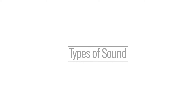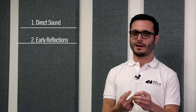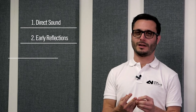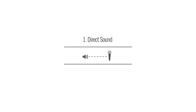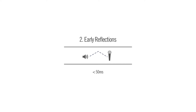We can divide the type of sound the microphone picks up into three different categories. Firstly, direct sound. Secondly, early reflections. And lastly, reverberations. Direct sound, as it suggests, is the sound that comes directly from the sound source and straight into a microphone without bouncing off any walls at all.